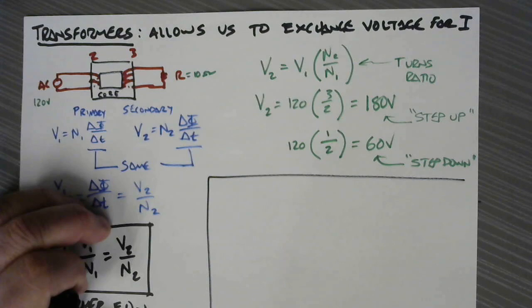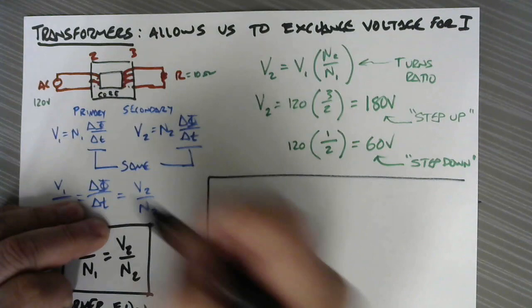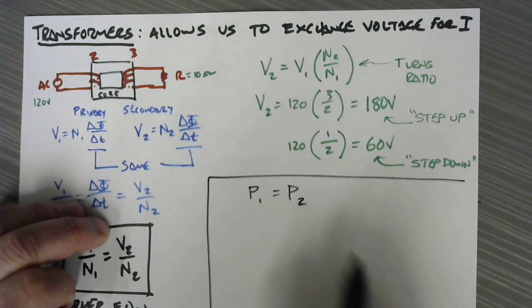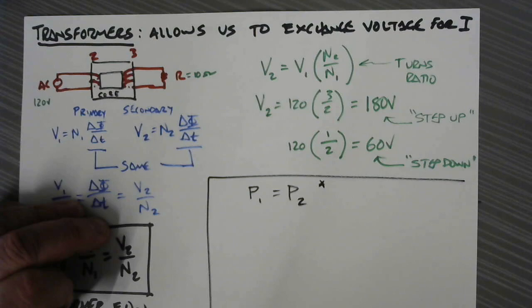So in this little box right here we know that energy is conserved - you don't get something for nothing. And in this case, because it's a rate of change problem, it's power that's conserved. The power on the primary side equals the power on the secondary side. By the way, this is not exactly true - there will be some losses, some resistance, some problems.